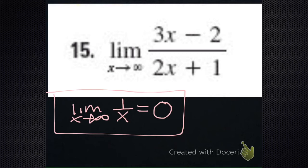We need to multiply by 1 — not just any 1, the magic one. I'm going to multiply top and bottom by 1 over x.